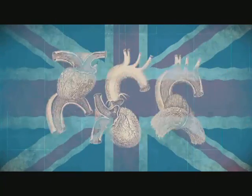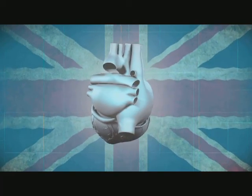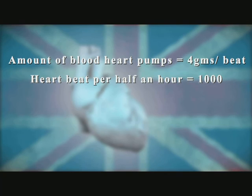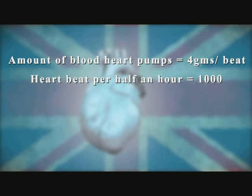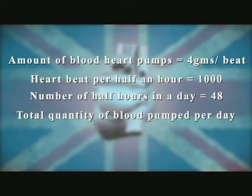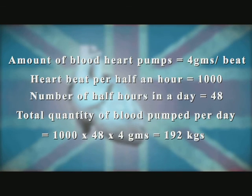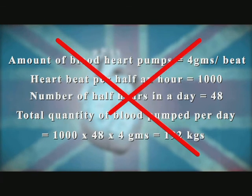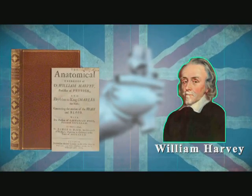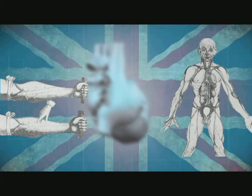Harvey's observations of dissected hearts showed that the passage of blood through the heart is unidirectional, due to one-way valves in arteries and veins. He observed that in most animals and humans, the heart pumps four grams per beat and beats 1,000 times per half hour — and there are 48 half-hours in a day. So the total blood pumped per day exceeds 1,000 × 48 × 4 grams, which equals 192 kg. But this is absurd — this amount far exceeds what the body could possibly make. So Galen's theory must not be true; Harvey showed the heart must be pumping the same blood over and over again, with one-way valves ensuring flow in a closed circuit.